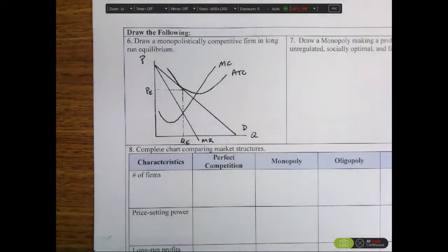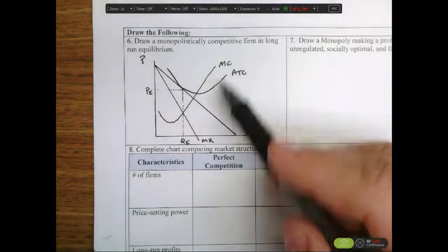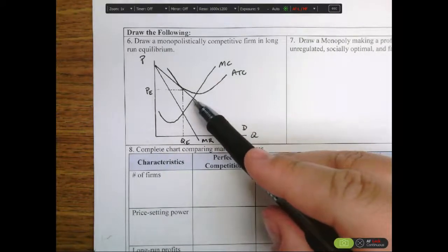The other thing we can see is deadweight loss. Deadweight loss is the loss in value from the perfectly competitive outcome, which is essentially where marginal cost equals demand. That's where supply equals demand.